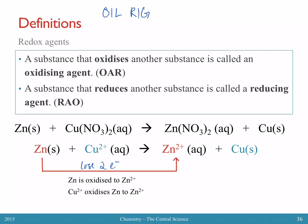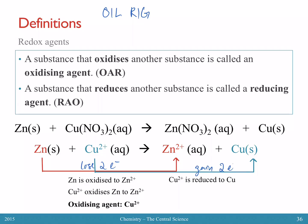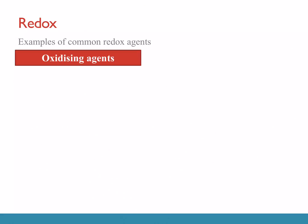Since zinc lost two electrons, zinc has been oxidized to Zn²⁺. Correspondingly, it means that Cu²⁺ was the one that oxidized zinc, so we say the oxidizing agent here is Cu²⁺ ions. Similarly, Cu²⁺ has been reduced to copper because there is a gain of two electrons, so zinc metal has reduced Cu²⁺ to copper, and hence the reducing agent is zinc.